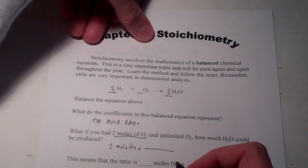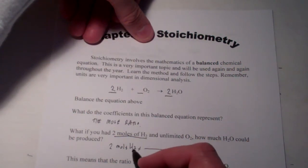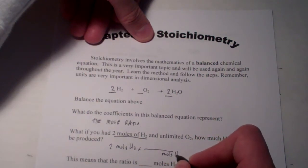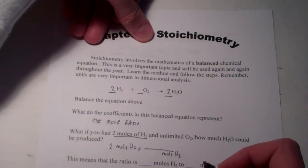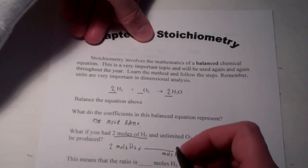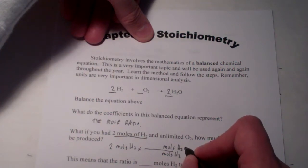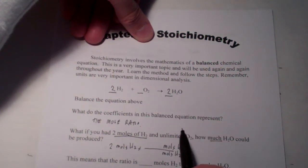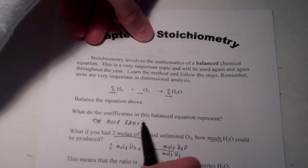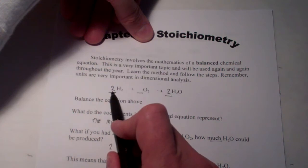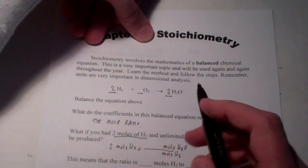We'll multiply by a conversion factor, which is just a fraction. We'll put the unit we want to get rid of on the bottom. Moles of hydrogen. And I want to know how much water I could make. Let's do that in moles also. We're going to go to moles of water. If the coefficients in the balanced equation represent the mole ratio,